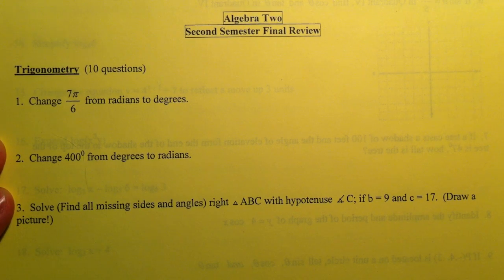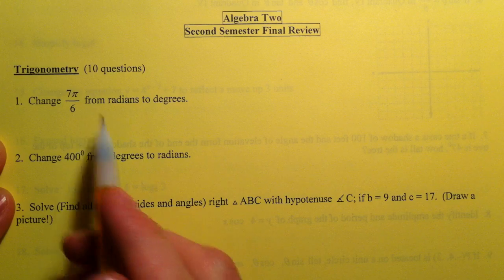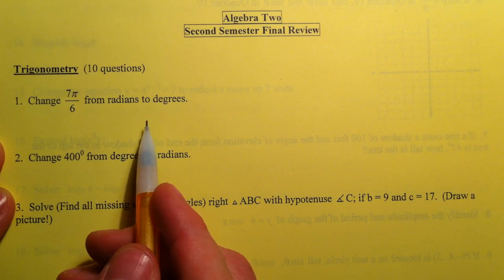Alright, let's get ready for this final exam. First up, change 7π over 6 from radians to degrees.